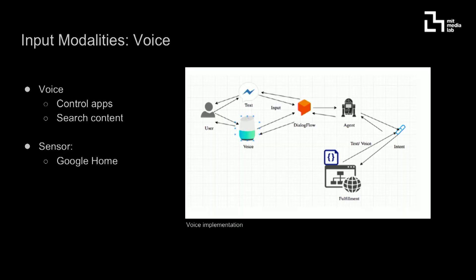On the voice side, there are a lot of applications now — Amazon Alexa, Google Home. Currently we're looking at how we can leverage voice as a secondary input modality for this kind of interface, whether it's controlling your apps or searching content. We're looking at using Google Home as an input device versus other devices, because of the amount of existing ecosystem support.